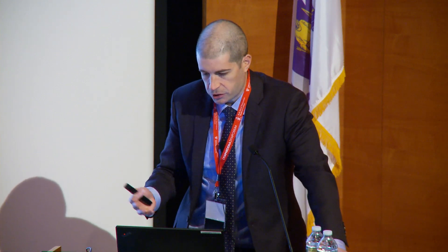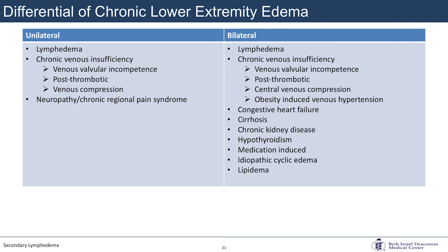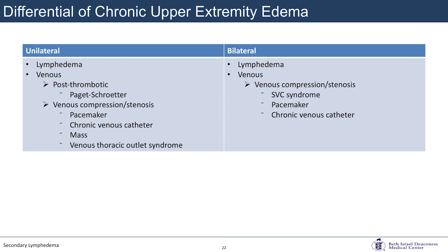Transitioning to the differential of chronic lower extremity edema: about 25% of patients coming into our clinic with quoted lymphedema do not actually have lymphedema. For unilateral edema, venous and lymphatic causes are highest on the differential. For bilateral edema, you have to think outside the limb — is there a systemic cause? Heart failure, liver failure, renal failure, hypothyroidism, obesity, medications, or central venous obstruction. For upper extremity edema, the differential is narrower — it tends to be lymphedema or venous — and with venous causes you must identify what's wrong: compression, clot, or other process.